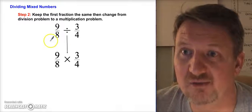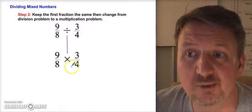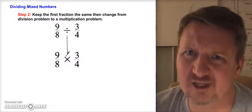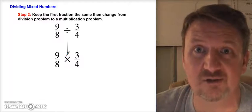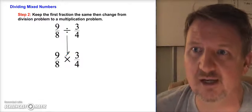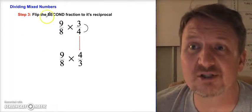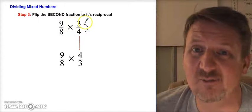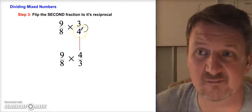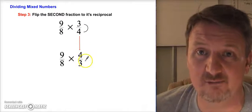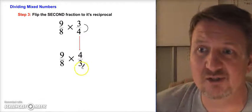Step two: keep the first fraction the same — nine-eighths stays as is. Then change the problem from a division problem to a multiplication problem. Step three: flip only the second fraction to use its reciprocal. We keep the first fraction the same. The original second fraction was three-fourths, so we flip it to four-thirds.